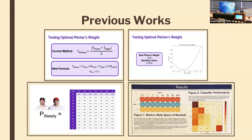For Cy Young pitcher Justin Verlander, he allowed a single 6% of the time and struck out 32%. To predict the outcome, Connor averaged the two matrices. So in a Justin Verlander versus Mike Trout matchup, in a 1-0 count, he predicted a single 9% of the time and a strikeout 24%.